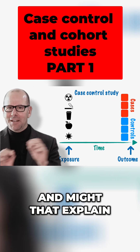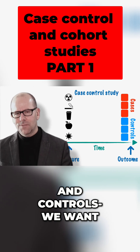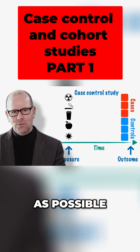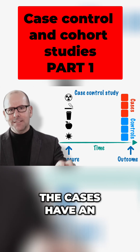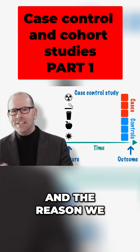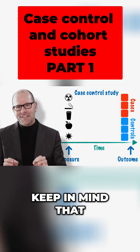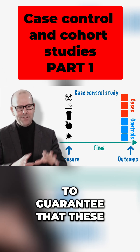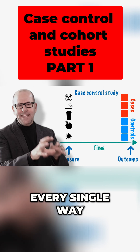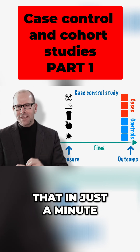We want the cases and controls to be as similar to each other as possible, with the exception of their different outcome — the cases have an outcome of interest, and the control group doesn't. The reason we want them to be similar is so that we can compare them. Keep in mind that it is difficult, if not impossible, to guarantee that these two groups are similar in every single way except for their different outcome, and that's one of the weaknesses of case control studies.